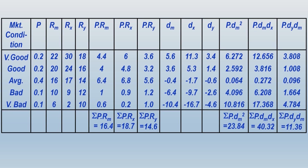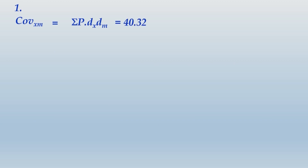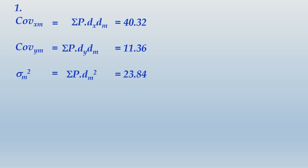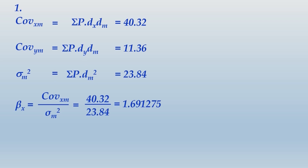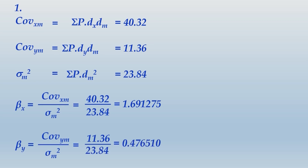From the computed values: covariance(XM) = 40.32, covariance(YM) = 11.36, variance of market = 23.84. Beta of X = covariance(XM) / variance(M) = 40.32 / 23.84 = 1.691275. Beta of Y = covariance(YM) / variance(M) = 11.36 / 23.84 = 0.476510.